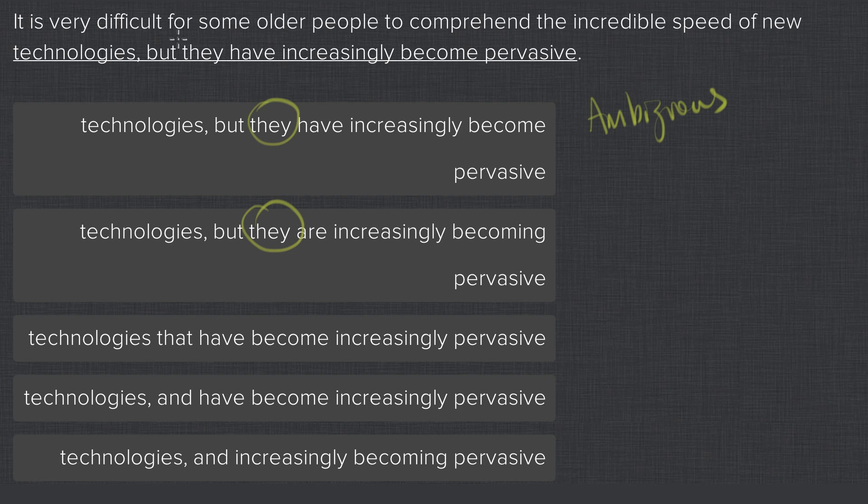in the original sentence, we have 'it's very difficult for some older people to comprehend the incredible speed of,' and we have another possible referent for this pronoun: new technologies.